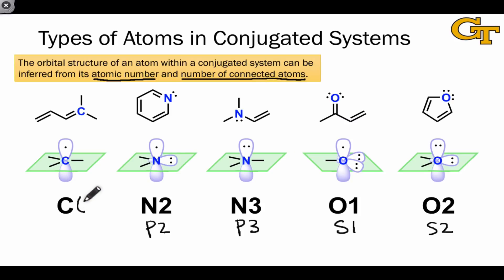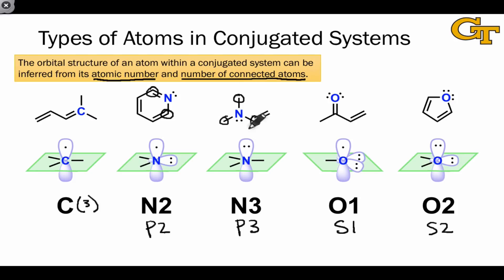Wherever we see these building blocks, we can infer the orbital structure from the atomic number, the type of element, and the number of connected atoms — that's what the number indicates here. Carbon will always be three-connected, so we can just write C. N2 means a two-connected nitrogen; N3 indicates a nitrogen connected to three other atoms, regardless of the bonding pattern. O1 indicates an oxygen connected to only one other atom, and O2 indicates an oxygen connected to two other atoms, irrespective of the bonding pattern.